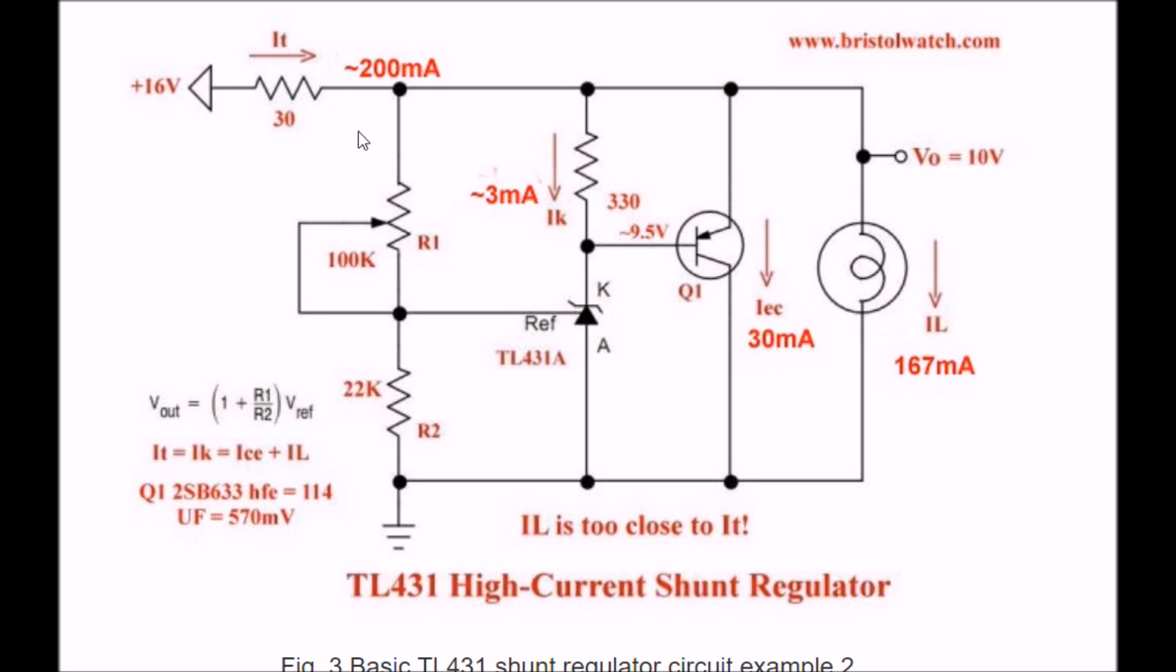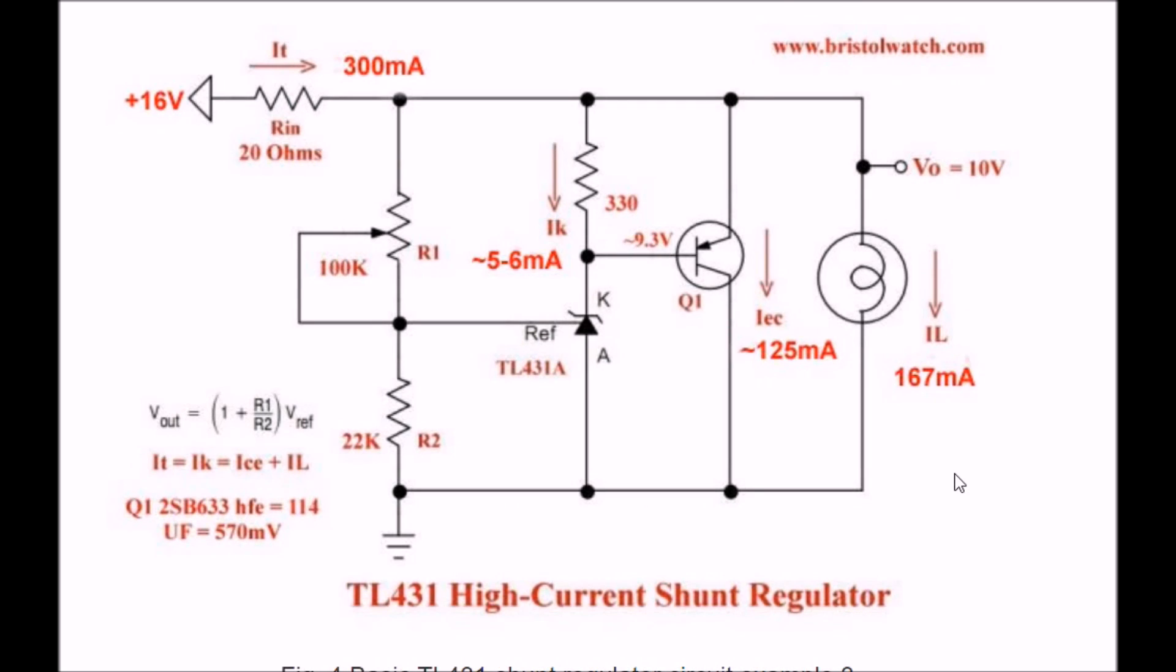So keep that in mind. Look at your desired voltage out and look at the resistance of this input resistor. Subtract out from what is supplied whatever the difference voltage is, divide by Rn, and you can get how much current is actually available at 10 volts.